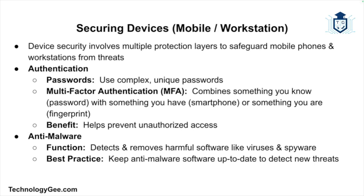Let's now move on to securing devices such as mobile phones and workstations. This involves multiple layers of protection to ensure devices and data are safe from attackers. The first thing we'll talk about is authentication — the process of verifying a user's identity before granting access to a device or system. Strong authentication methods include complex and unique passwords, and multi-factor authentication, which combines something you know like a password, something you have like a smartphone, or something you are like your fingerprint.